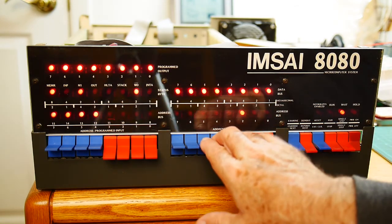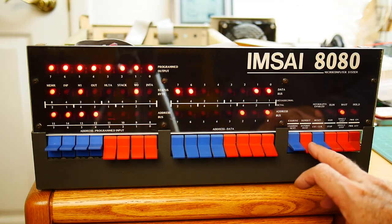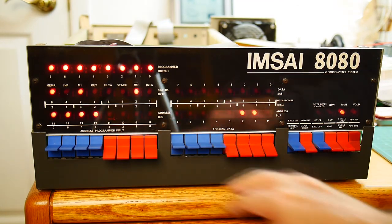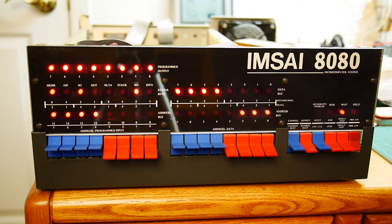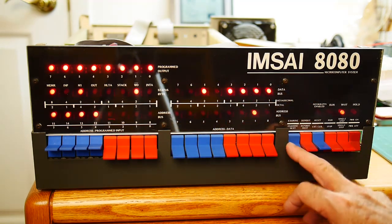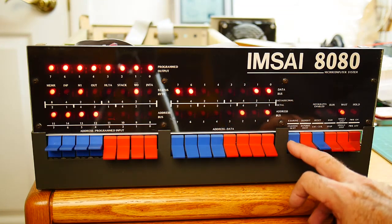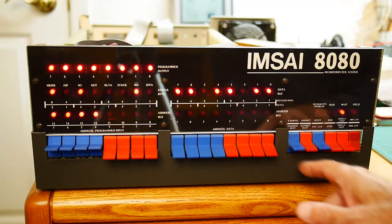We'll do a jump instruction, 303, back to 0, F0. Let's take a look at that program. Input from F, complement, output to F, jump. Looks good to me.